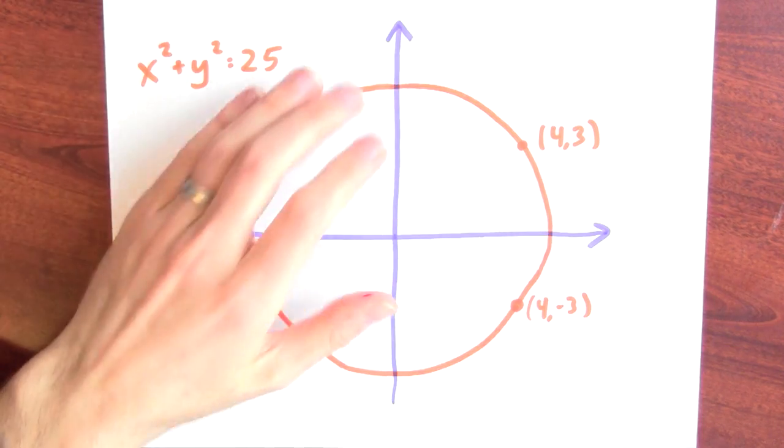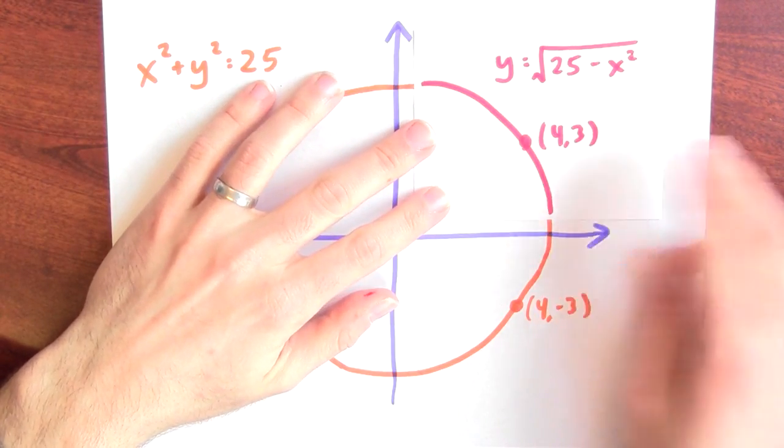Nevertheless, if you pick a specific point like 4, 3, you might be able to find a function whose graph traces out that same curve. If I pick 4, 3, there is a function